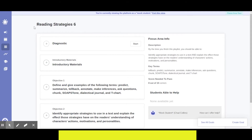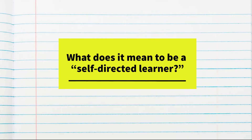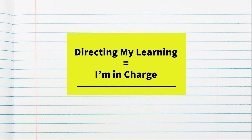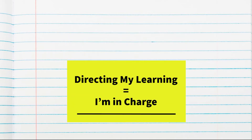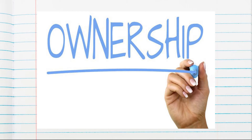Ask yourself this question: What do you think it means to be a self-directed learner? Break the phrase apart. If you're self-directed, you're the one who's directing or in charge of that thing, which in this case is learning. If I'm directing how my learning is going, I'm in charge of said learning. I'm taking ownership of it, and probably most importantly, I'm learning in the way that best suits me.